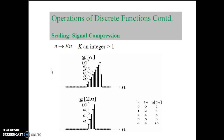Now let us see the operation on discrete functions. We know that if t is replaced by kn, where k is an integer, and whenever the value of a is greater than 1, then compression of the signal takes place. This is shown in the figure: g(n) is the original signal and g(2n) represents compression, where compression takes place.